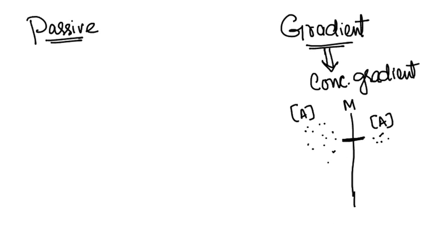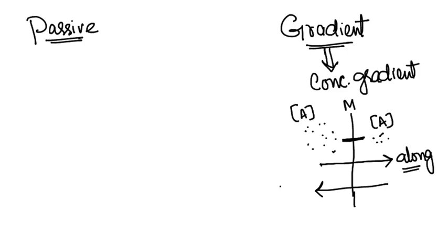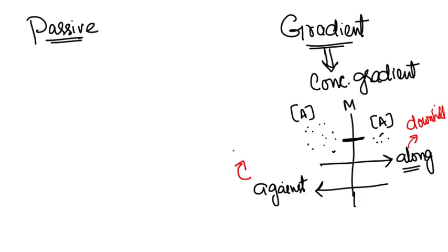If we transport a molecule from the high concentration side to the low concentration side, we call this transport along the gradient — also called downhill transport. But if we move in the opposite direction, we call it against the gradient, also called uphill transport.